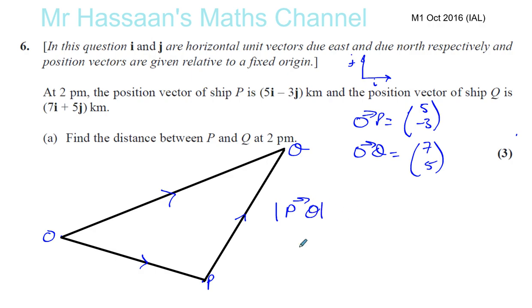All right, so let's first of all find out what P to Q is. Now P to Q, if I want to go from P to Q, I've got to go from P to O and then from O to Q. P to O plus O to Q. Okay, P to O is the same as minus O to P. So it's like saying minus OP plus OQ, basically OQ minus OP. All right, that will take me from P to Q.